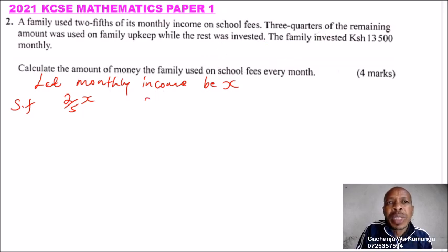For the three-quarters of the remaining, you say x minus 2/5x, which is like 1 minus 2/5, and this equals 3/5x. So that is the remainder.